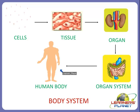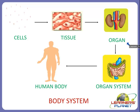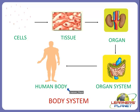We cannot say that directly our body system is made up from the cells. First, cells will combine to form tissue, then many tissues will combine to form an organ, many organs will combine to form an organ system, and finally our body system will be made. This is actually what is termed as a system.